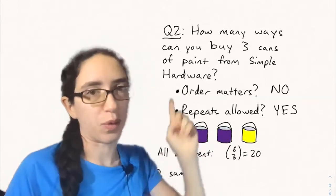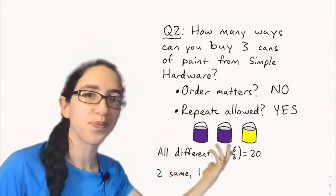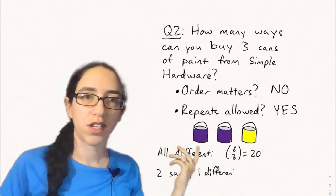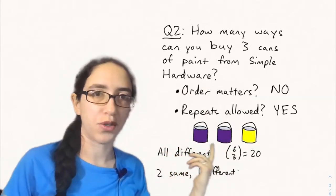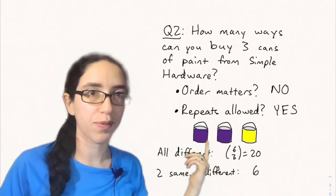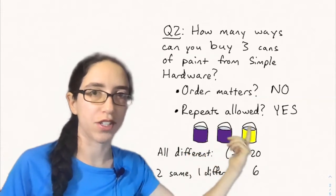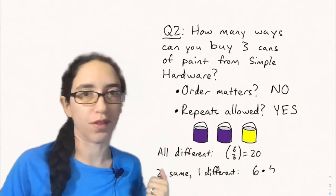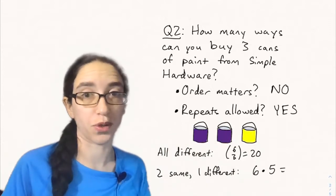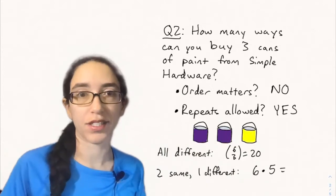Now say two of them are the same and one of them is different like in this picture. Well then there's going to be 6 ways of choosing what color the two that are the same are. And once I choose those then there's 5 ways of choosing the next color that's different from those two. And so there's 30 possibilities in that case.